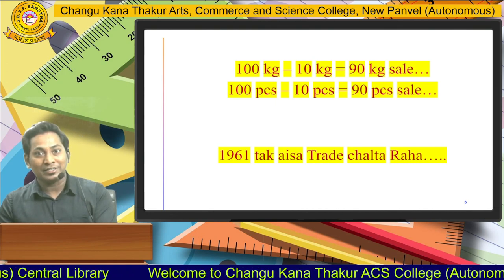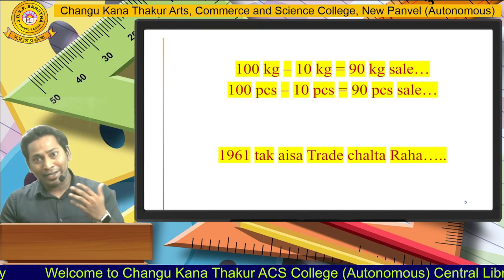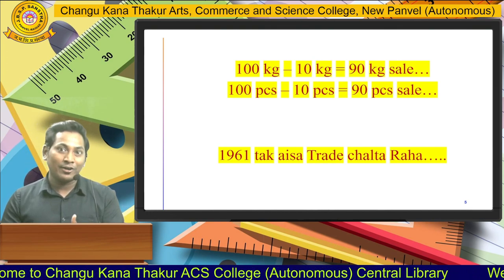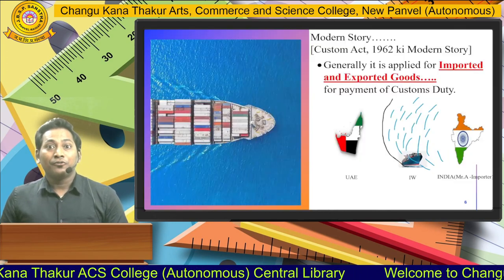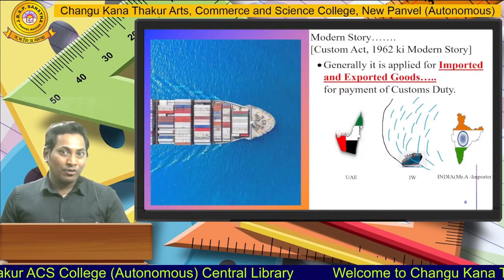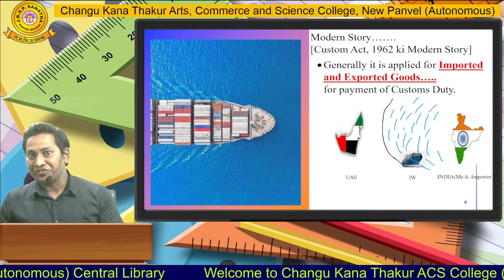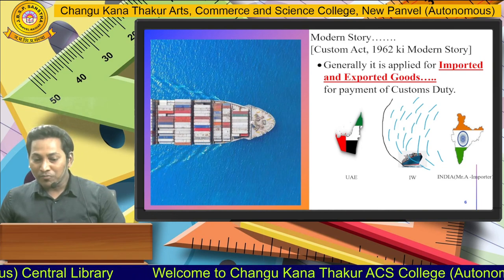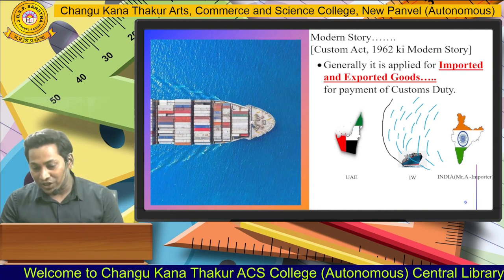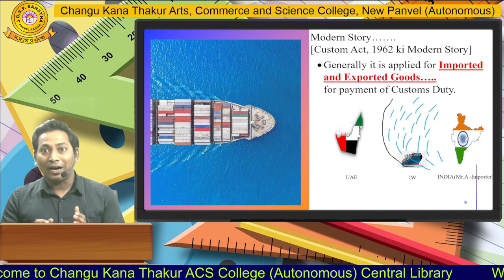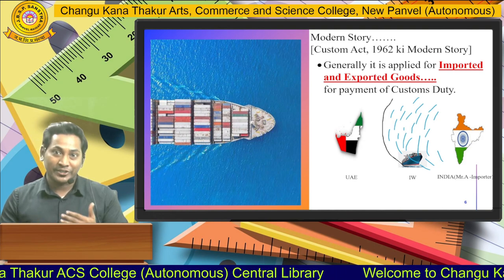In modern times, we give these taxes to the local authority. At that time it was the Senapati and the kingdom; today it stands for the local authority. That was the ancient story. Now let's move to the modern story of Custom Act 1962. It is applied for imported and exported goods for the payment of custom duty.